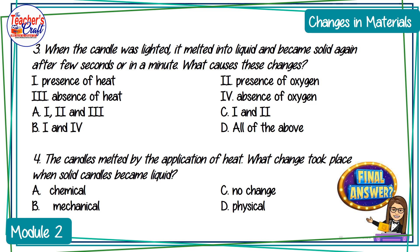Number four: the candle melted by the application of heat. What change took place when the solid candle became liquid? A — chemical; B — mechanical; C — no change; or D — physical.